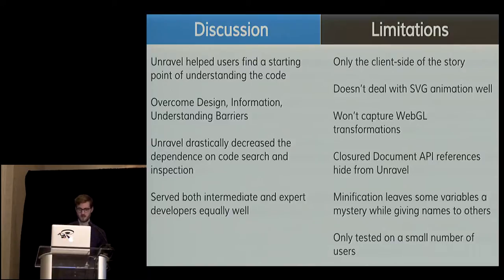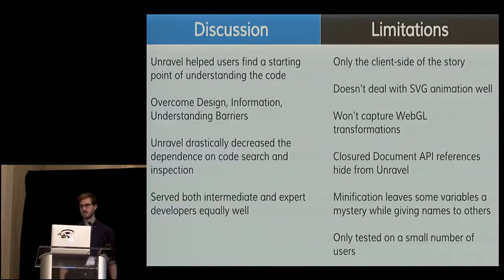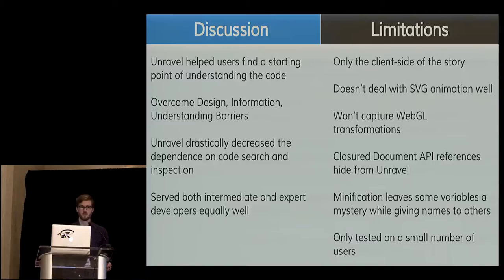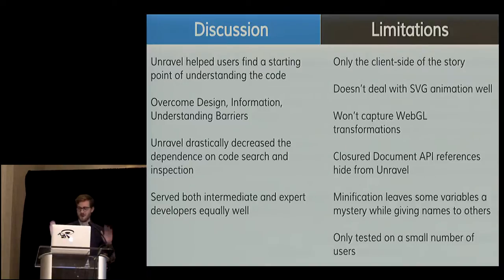The limitations: this is only the client side of the story — we don't know what's happening on the server side, which is a black box for us. Unravel doesn't deal with SVG animation or WebGL well — it just can't capture those. Closure'd-off document API references won't be exposed. And minification does leave some variables a mystery — however, this can have an unforeseen benefit because people are honestly really bad at naming variables, so sometimes it's more fun to have var A equals fooBar. It was also only tested on a small number of users, so we'd like to see a larger study assessing its limitations.